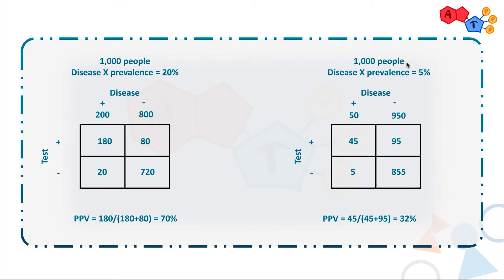Now let's go to the other population with a lower prevalence of 5%. We're expecting the positive predictive value to go down. With 1000 people and 5% prevalence, 50 will have the disease and 950 won't. Using the 90% rules: 90% of 50 gives 45 true positives, and 90% of 950 gives 855 true negatives, leaving 95 false positives. The positive predictive value is 45 over 45 plus 95, which is roughly 32%. So if a patient got a positive, you'd tell him there's only a 32% chance he actually has the disease.